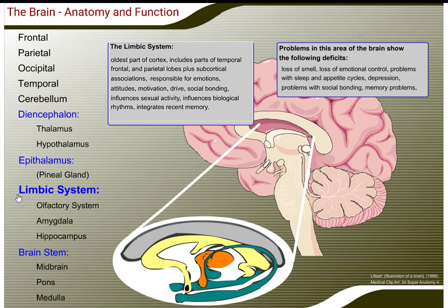The limbic system is the oldest part of the cortex and includes parts of the temporal, frontal, and parietal lobes, plus subcortical associations. It is responsible for emotions, attitudes, motivation, drive, and social bonding. It influences sexual activity, biological rhythms, and integrates recent memory. Problems in this area show: loss of smell, loss of emotional control, problems with sleep and appetite cycles, depression, problems with social bonding, and memory problems.